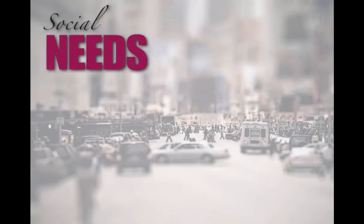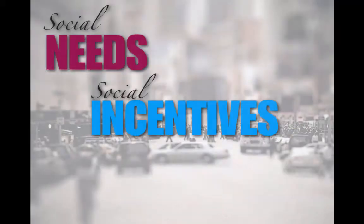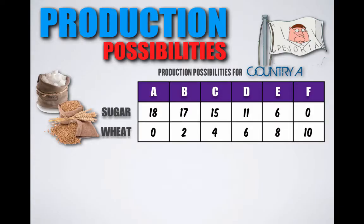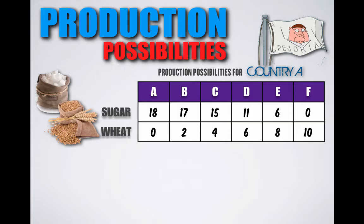Petoria will choose to produce at one of those combinations based on their social needs, social incentives, and social goals. Meaning, if they want to have more sugar and less wheat, Petoria will choose to produce at combinations A, B, C, or D. If they want more wheat and less sugar, Petoria will choose to produce at either combination F or E.